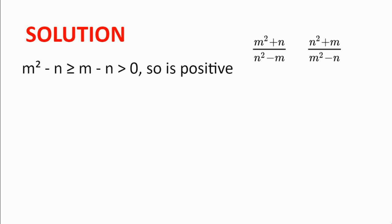We will mostly be considering the second fraction. We first notice that the denominator m² - n is greater than or equal to m - n, since m² ≥ m. And since m > n, we know m² - n is positive.